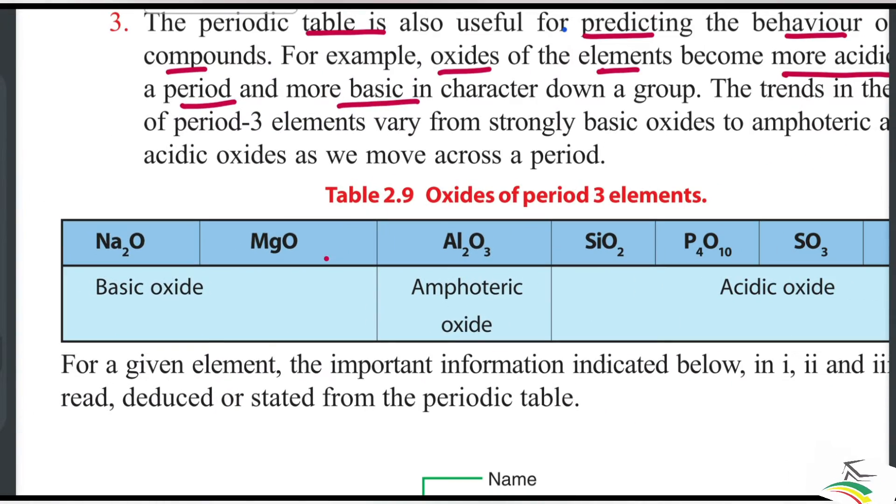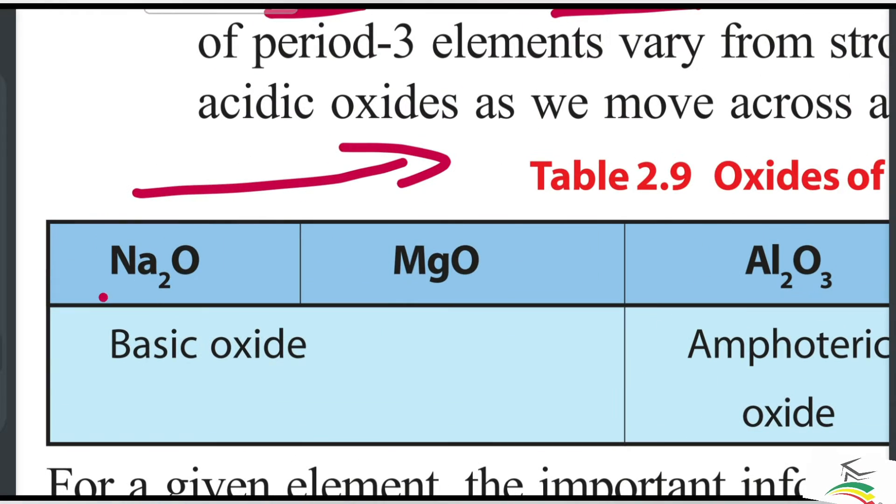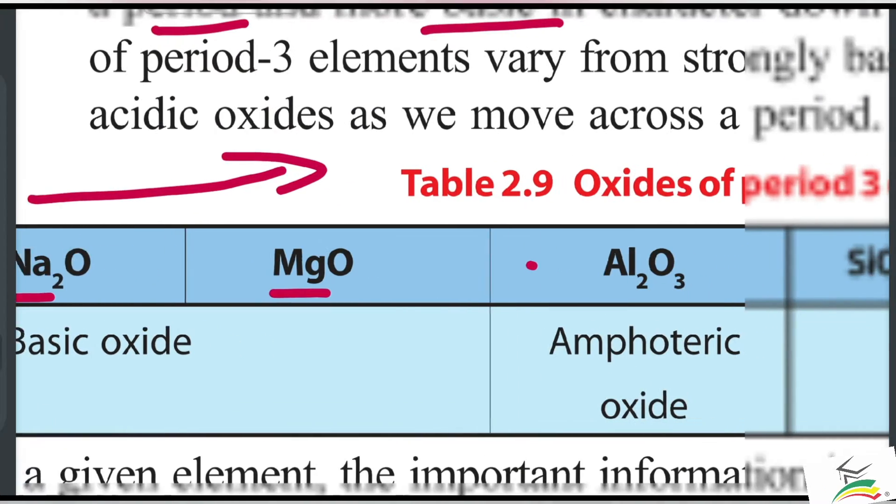For example, the oxides of sodium oxide and magnesium oxide illustrate this trend, showing how oxide character changes across the period.